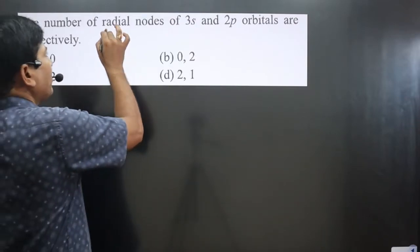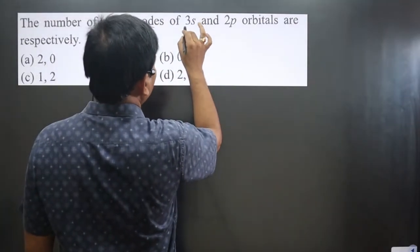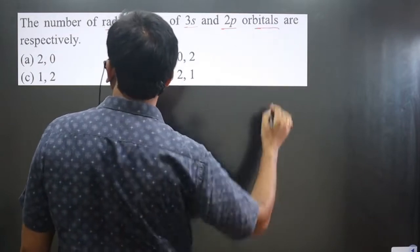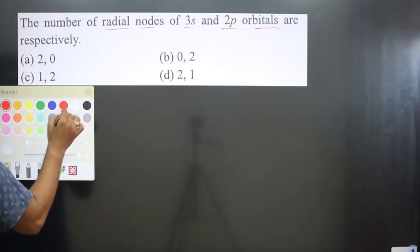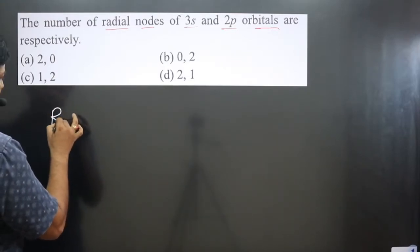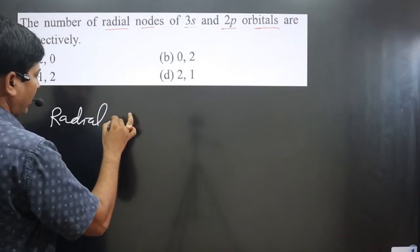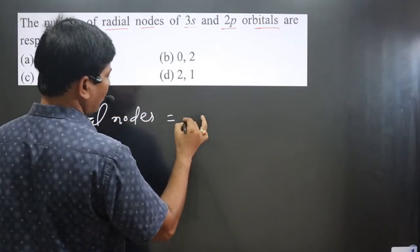The question says the number of radial nodes of 3s and 2p orbitals are respectively. We have to calculate the number of radial nodes. The formula for radial nodes: radial nodes is equal to n minus l minus 1.